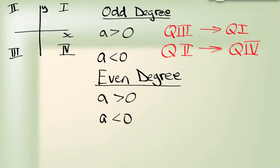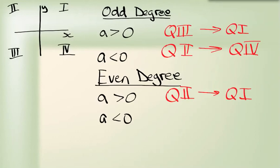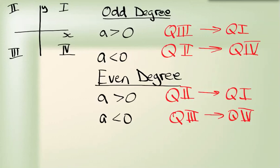For even-degree functions, if the leading coefficient is positive, the graph starts in quadrant 2 and ends in quadrant 1 — just like a parabola that opens upward. If the leading coefficient is negative, it starts in quadrant 3 and ends in quadrant 4, like a parabola that opens downward. These are just the end behaviors. When looking at polynomials, you need to remember the degree, be able to roughly identify it from a graph, and use the degree and leading coefficient to determine the end behavior.